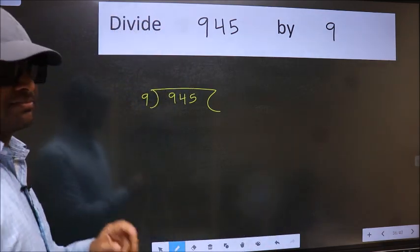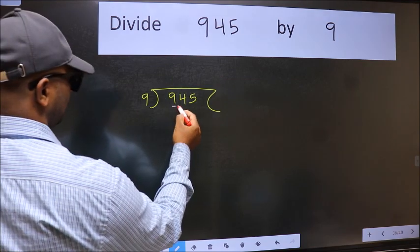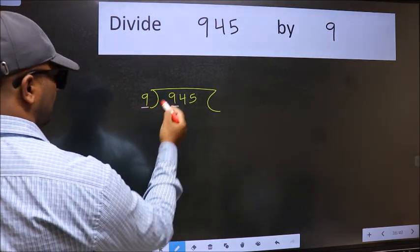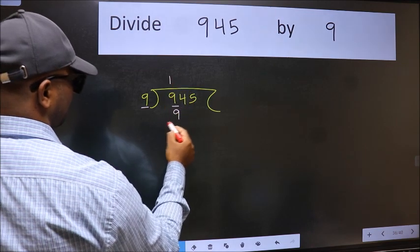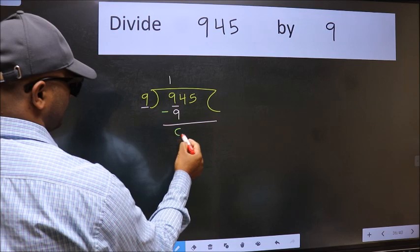This is your step 1. Next, here we have 9 and here 9. When do we get 9 in the 9 table? 9 once is 9. Now we should subtract. We get 0.